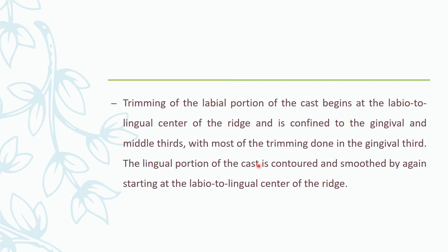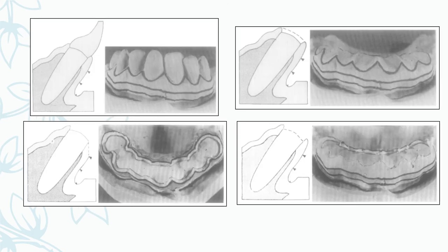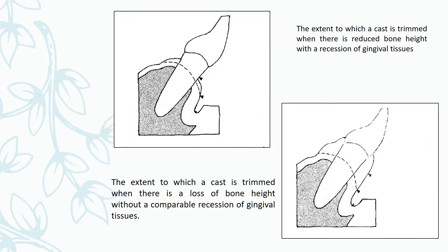Trimming the labial portion of the cast begins from the labio-lingual center of the ridge and is confined to the gingival and middle third. The lingual portion of the cast is contoured, smoothened, and again trimmed starting at the labio-lingual center. Photos show the guide for how to trim: starting from the region and trimming a little, appreciating the photos and smoothening out the concavity. This step is important because we are creating an edentulous space on the cast.